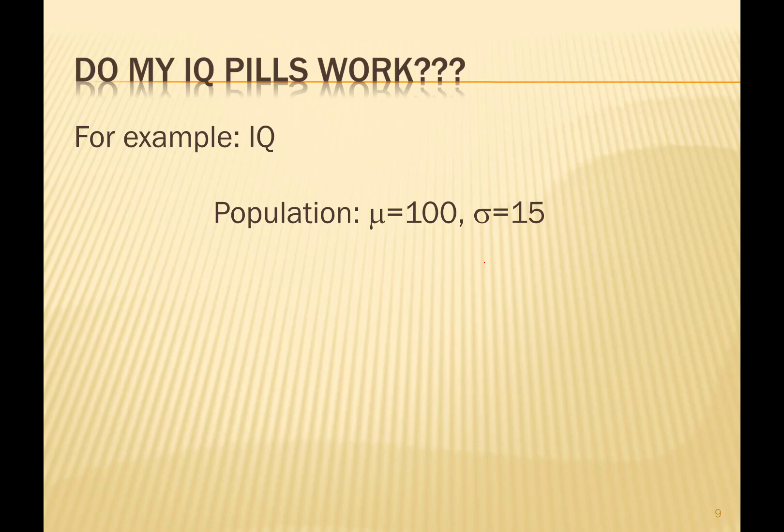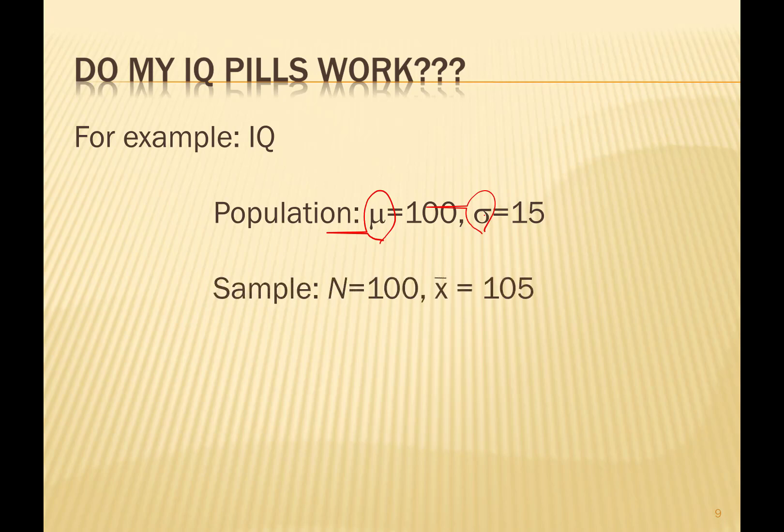Notice the mu and sigma used to indicate that this is population information. Here's information about the sample: I was able to collect 100 brave souls to take my IQ pills. After a duration of time taking this IQ pill, the sample mean came out to be 105. We know the population mean is 100 — they were at 100 before the pills, and after the pills their sample mean came out to be 105. The question is: did that increase of 5 points in IQ attributable to the IQ pills, or did it happen by chance?